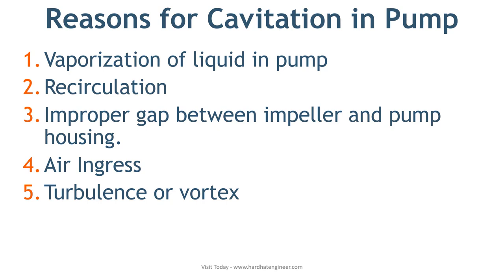The fourth reason is air ingress. If the pump is running at lower than atmospheric pressure, there is a chance of air ingress from any poor joint, and this air will create the same cavitation effect in the pump. The fifth and last reason is turbulence in the flow. Turbulence or vortex can occur in flowing liquid due to various design-related reasons in the piping system. If this vortex forms near the pump suction, it will have the same effect as low NPSH. There may be other reasons, but these five are the major contributors.